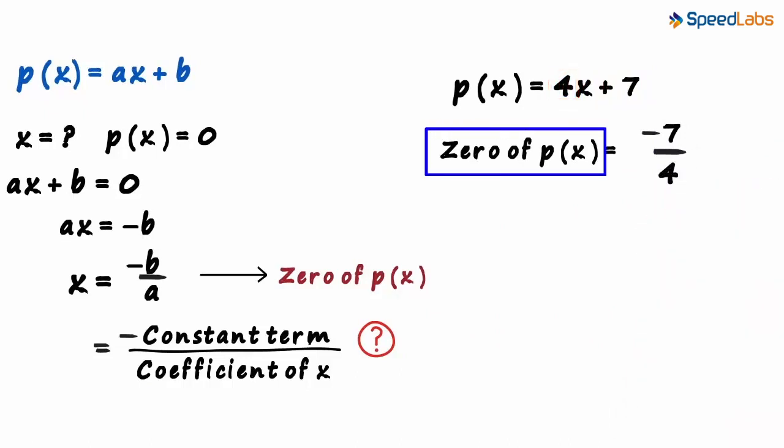We got the zero with just one step. All we did is write this as the negative of this term divided by this term.